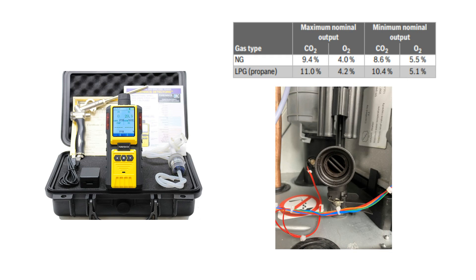Next, check the gas air ratio using your combustion analyzer and correct if out of range. Follow the chart shown for natural gas and propane.